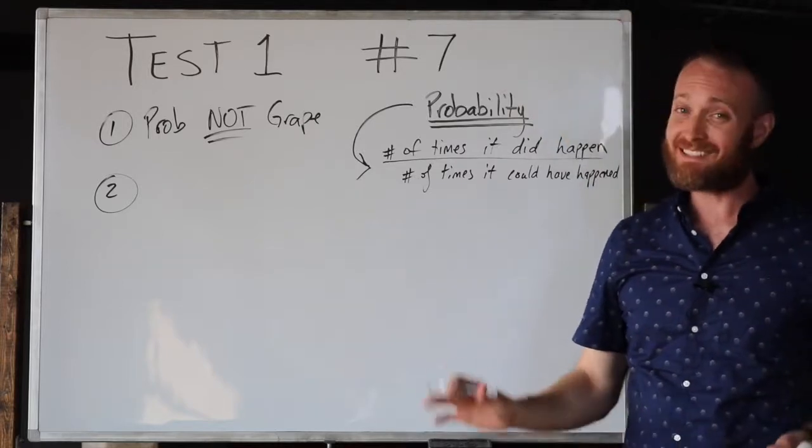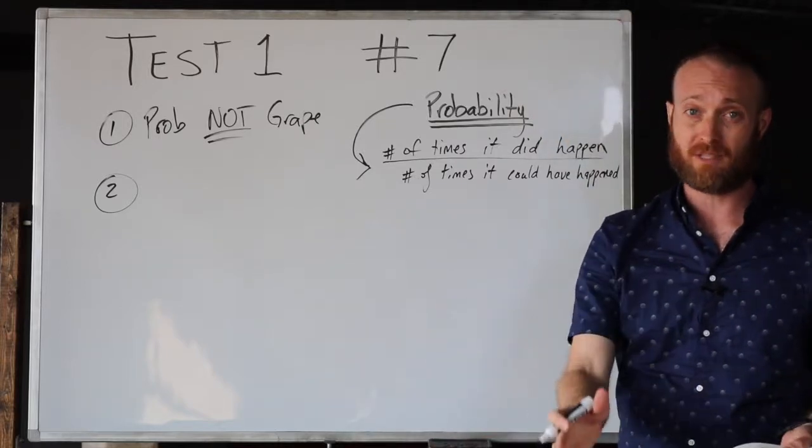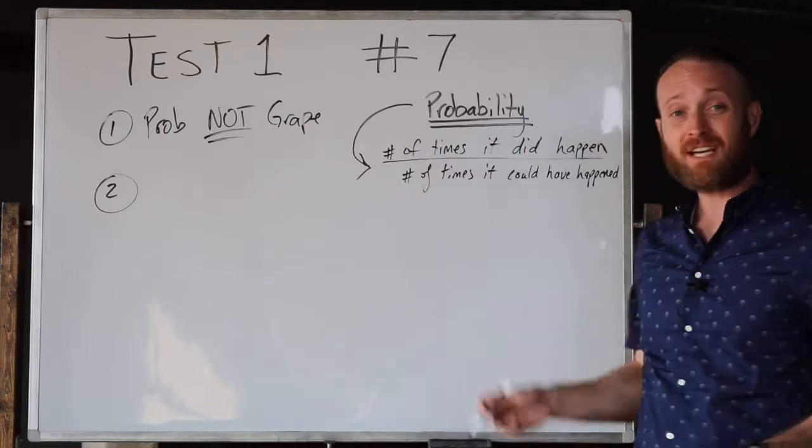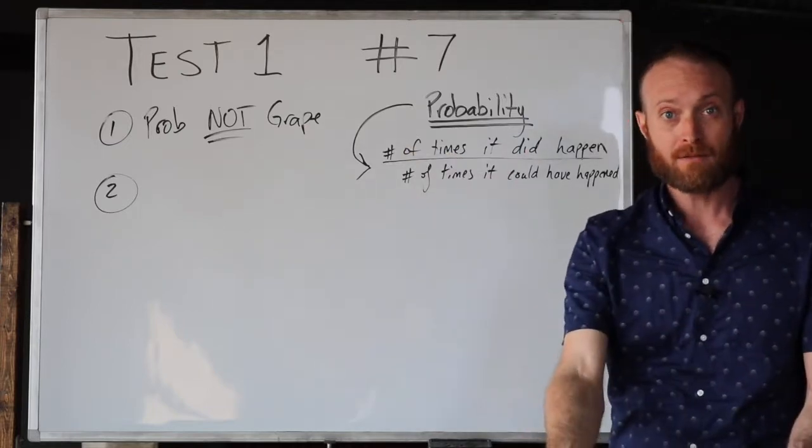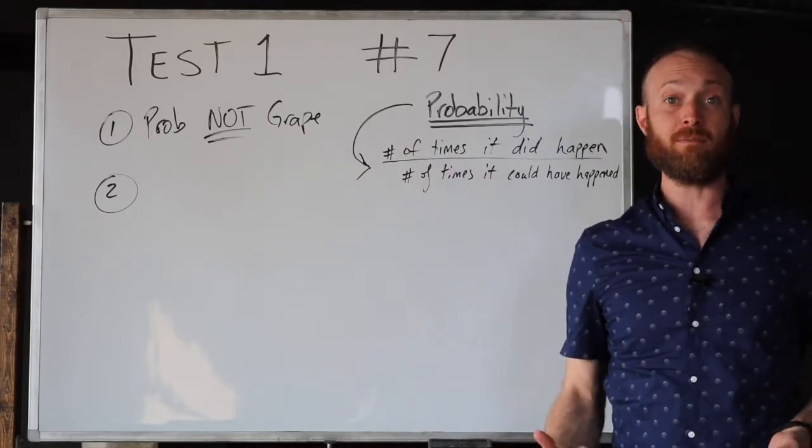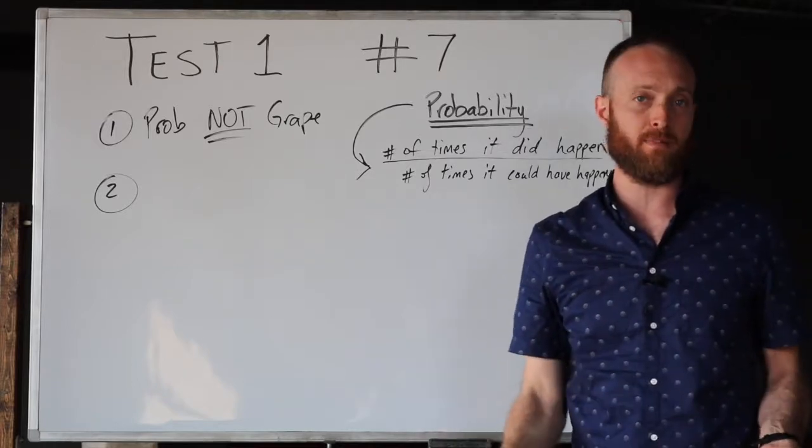...basic form - this is a simplified definition, but for our purposes it'll work - is the number of times something did happen divided by the number of times it could have happened. That's the simplest way we can think about probability.